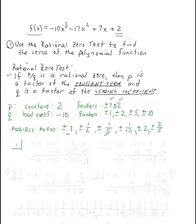Let's start with x=1. Our coefficients are negative 10, negative 17, 7, and 2. Doing our synthetic division: bring down negative 10; 1 times negative 10 is negative 10; adding gives negative 27; 1 times negative 27 is negative 27; adding gives negative 20; 1 times negative 20 is negative 20; adding gives negative 18. Plugging in x=1 gives a function value of negative 18 — not a zero.